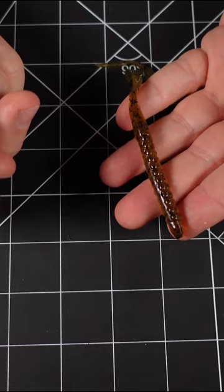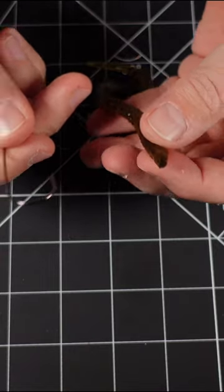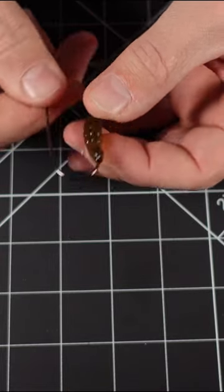Tie your line on with your favorite knot just like this. Start by placing the hook point into the head of the worm until about the barb.